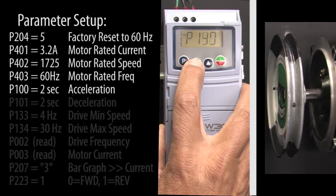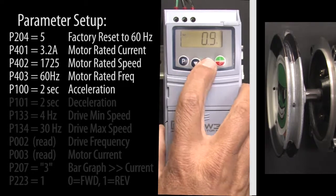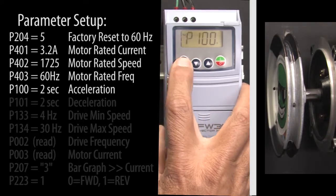Scroll to the acceleration parameter which is 100, hit P to change it, I'll change it to 2 seconds and hit P to accept that value.